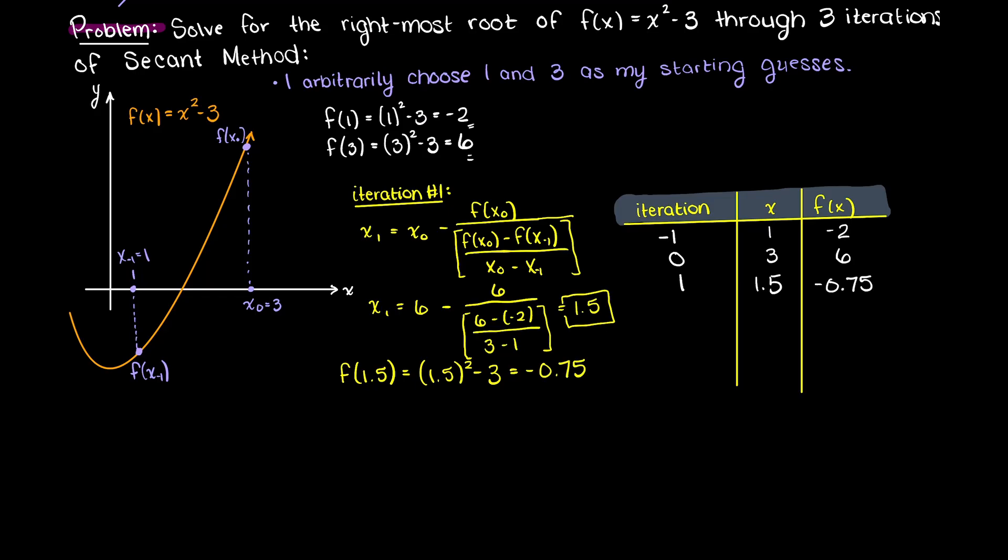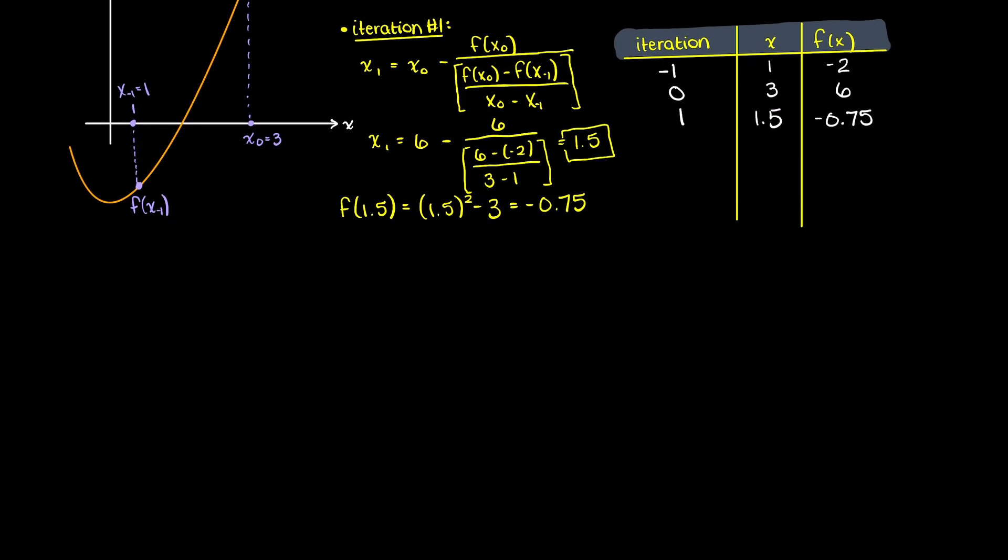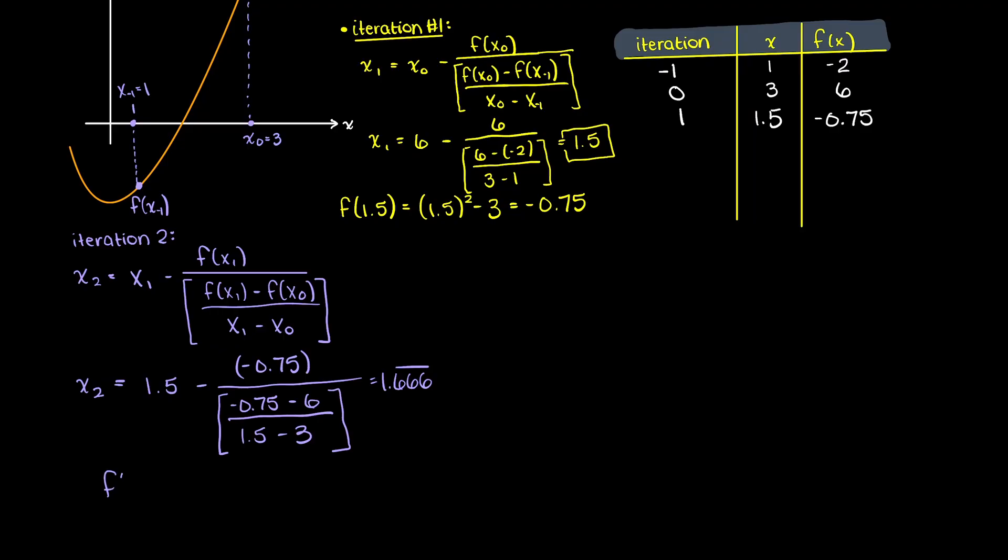Let's just repeat this process two more times to get our required three iterations. Again, let's rewrite our general secant formula for our second iteration. Now, we can just go ahead and fill in all the variables with our known values. And we are left with an x value of 1.666 repeating.